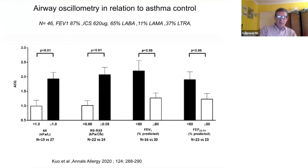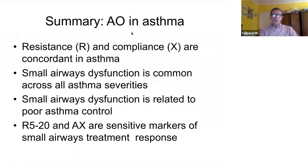This is using R5-R19, which is what the TremoFlo generates, rather than R5-R20, but they're virtually interchangeable. Again, you can see a nearly one-point difference in ACQ using R5-R19.